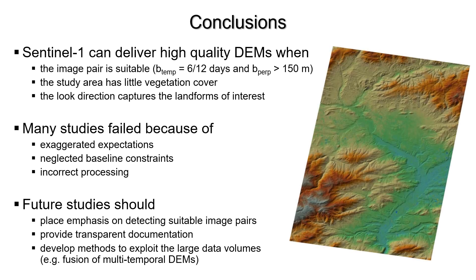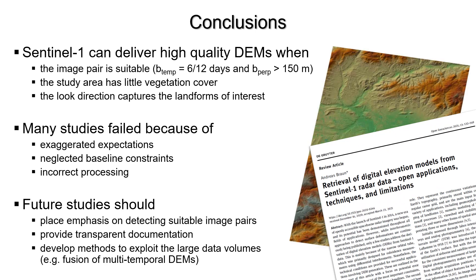To conclude, Sentinel-1 can deliver high quality DEMs, but only if the minimum baseline conditions are met and error sources are handled correctly. Many of the failed attempts could have been avoided with more profound knowledge on the various aspects of DEM generation. Accordingly, awareness of error sources and the transparent communication of methods are crucial. These findings have been summarized in a review paper in the Open Geosciences Journal.